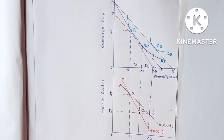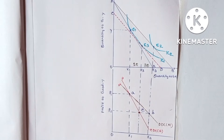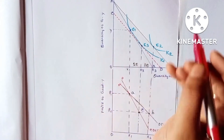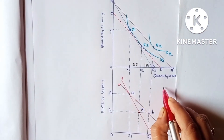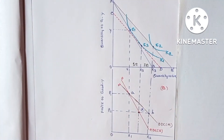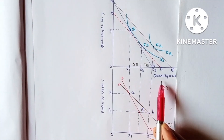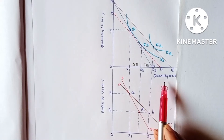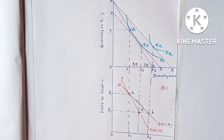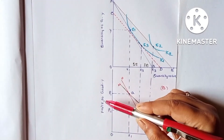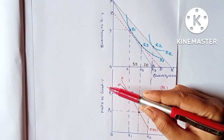Now let us start deriving the ordinary demand curve and the compensated demand curve. In figure A, the x-axis represents quantity of good X and the y-axis represents quantity of good Y. In figure B, the x-axis represents quantity of good X and the y-axis represents the price of good X.